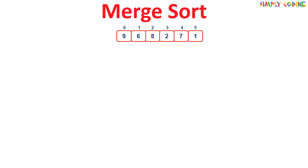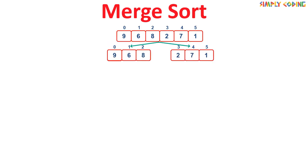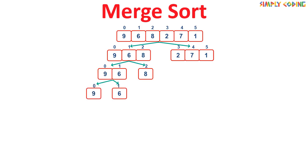The array has indexes starting from 0 to 5. We start with the first part, which is to recursively divide the arrays into two halves until the size of each sub-array becomes one. In the first step, the array is divided into [9, 6, 8] and [2, 7, 1]. Then the left-hand side is split into [9, 6] and [8]. In the next step, [9, 6] is split into [9] and [6].